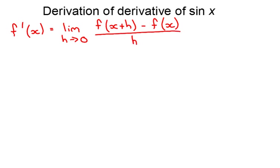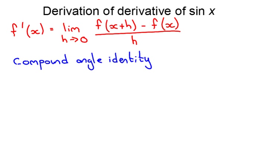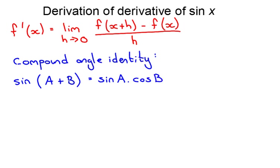The other thing we need is the compound angle identity. You haven't done compound angles this year, but you will do them in core maths in grade 12, so we'll address this more then. The compound angle identity states that sine of an angle plus another angle equals sine of the first angle times cos of the second angle, plus cos of the first angle times sine of the second angle.